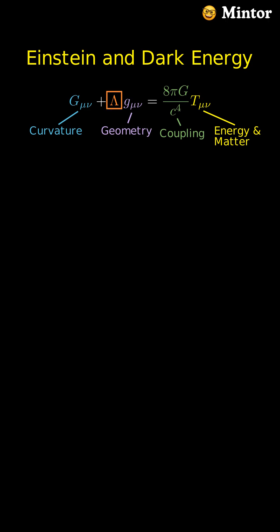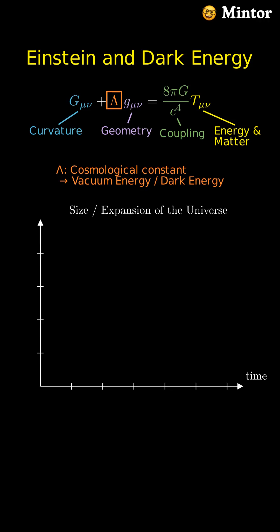But what about the cosmological constant term lambda? The cosmological constant is a free parameter in the equations and represents a uniform energy filling space, often linked to dark energy. It plays a crucial part in the expansion of our universe.